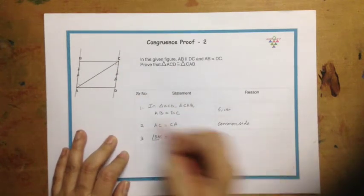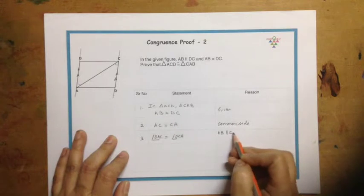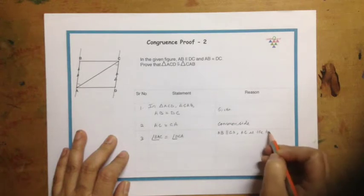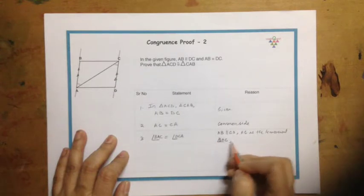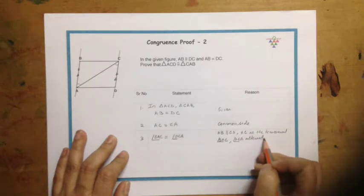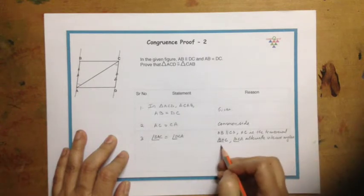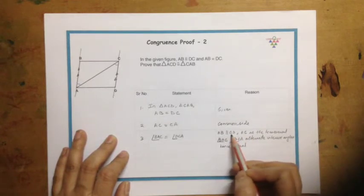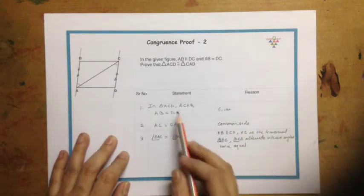And why is that? Because AB is given as parallel to CD. AC is the transversal. And we have angle BAC and angle DCA as alternate interior angles. Hence, they are equal. Because when a transversal cuts a pair of parallel lines, the alternate interior angles are equal. Hence, this.